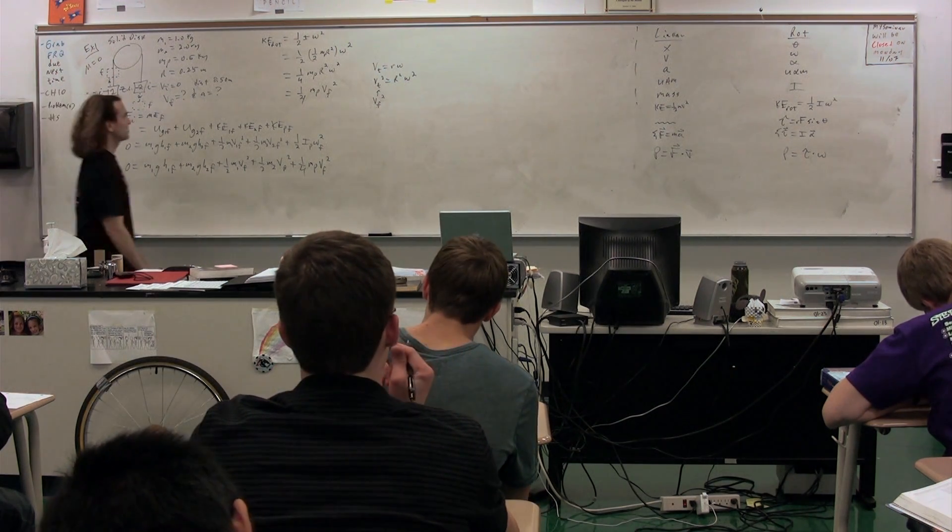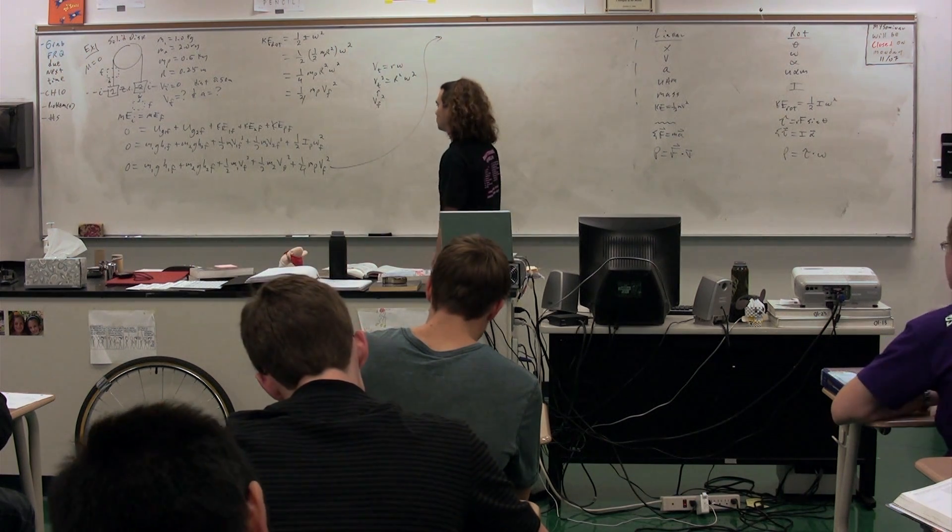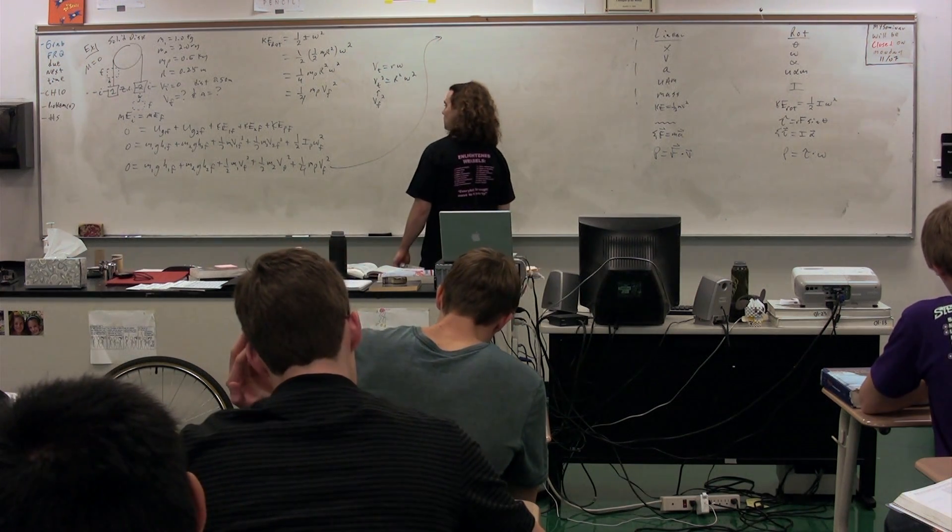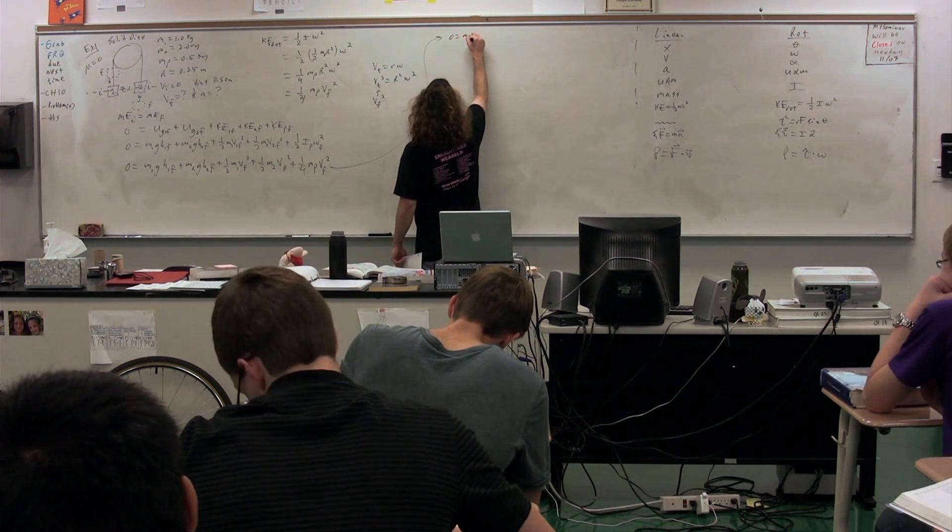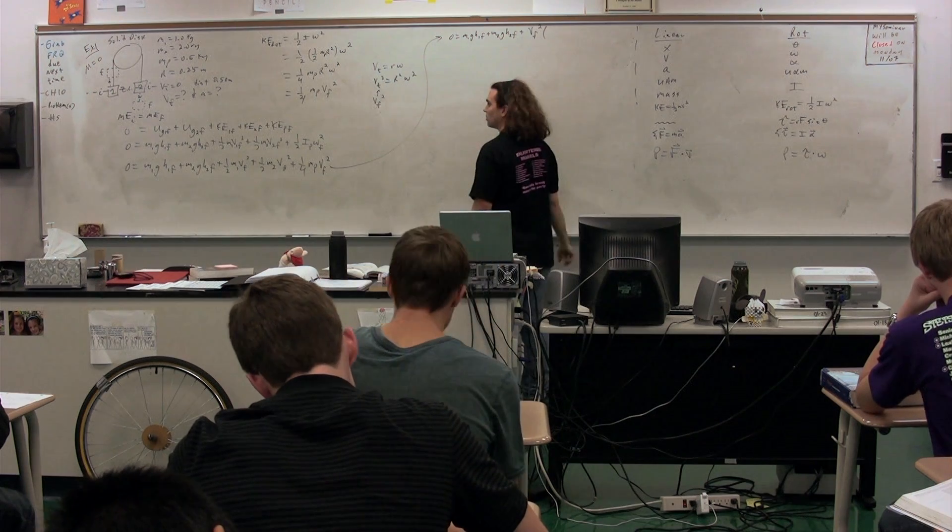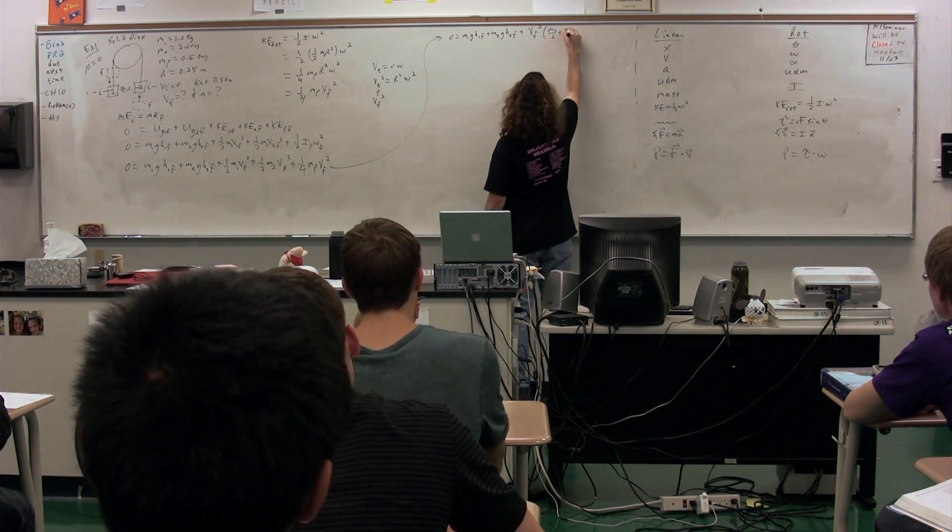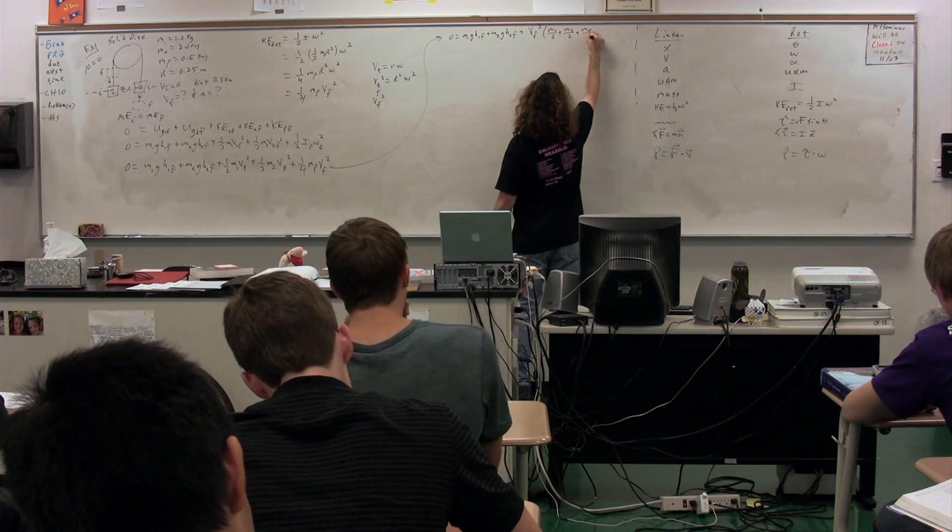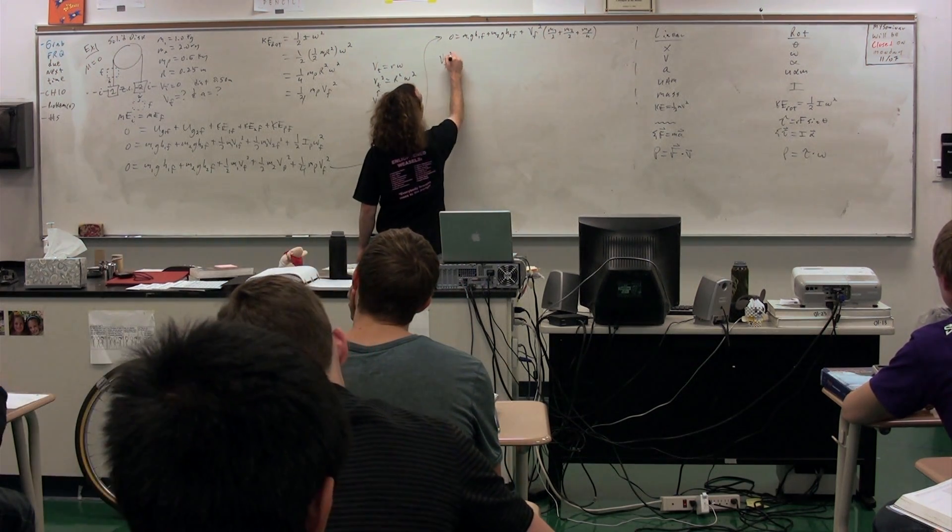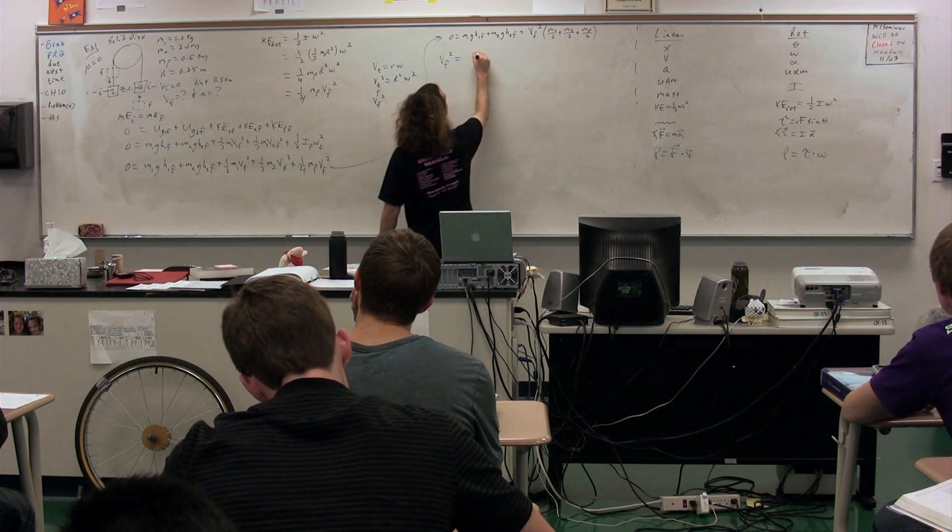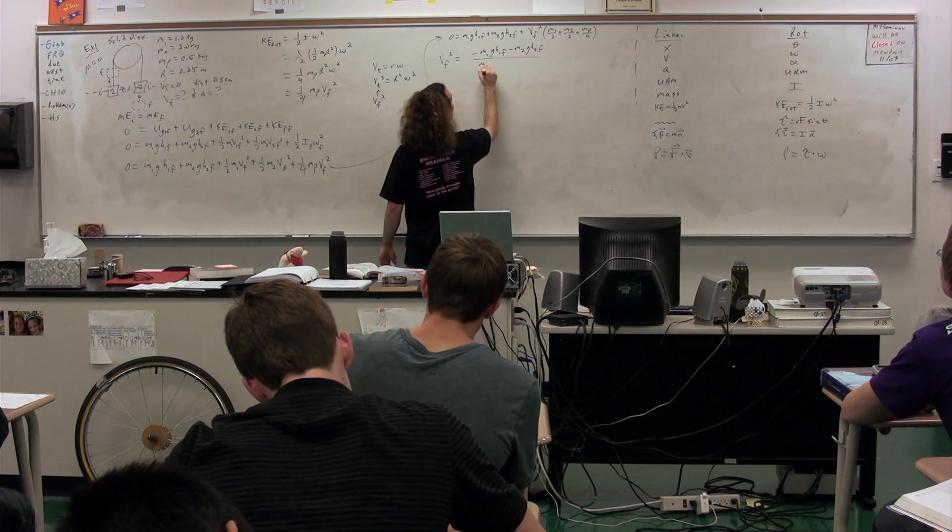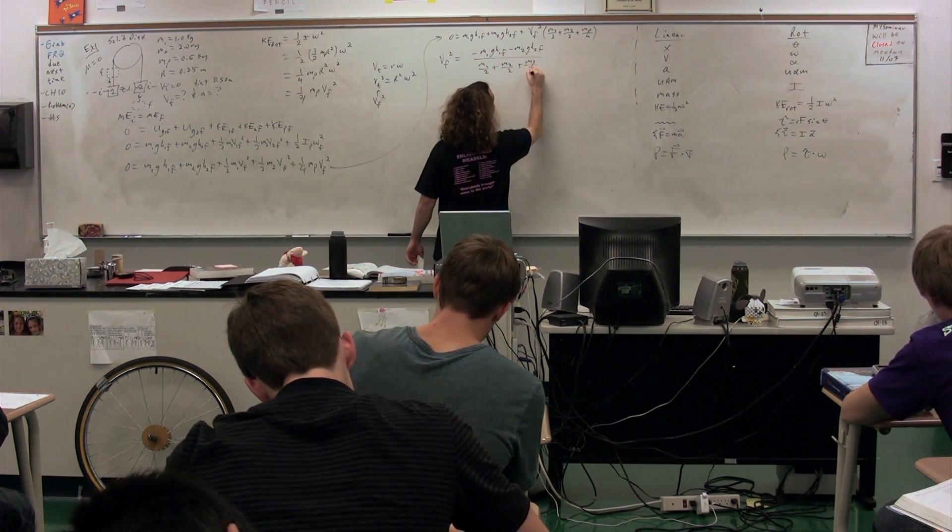What are we trying to find? Final velocity. 0 equals M1 G H1 final, plus M2 G H2 final, plus velocity final squared, multiplied by M1 over 2, plus M2 over 2, plus mass of the pulley over 4. So, the velocity final squared is going to be equal to the negative M1 G H1 final, minus M2 G H2 final, divided by mass 1 divided by 2, plus mass 2 divided by 2, plus mass of the pulley divided by 4.